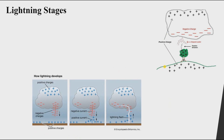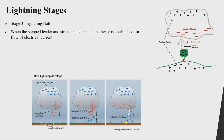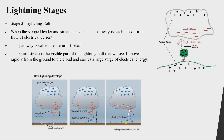We have the stepped leader going downward and the upward positive streamer. When they touch each other, a pathway is established for the flow of electric current — this is called the return stroke, which is what we see as the visible lightning bolt. Due to positive charges flowing from the ground to the cloud, we think the current flows cloud to ground, but in reality it goes from ground to cloud.